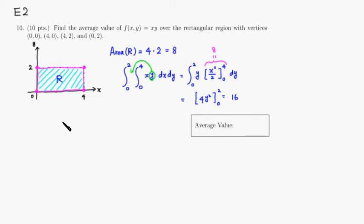So the average value that we're looking for is equal to this integral value divided by the area, which is 8. So this is equal to 2. So average value is 2.